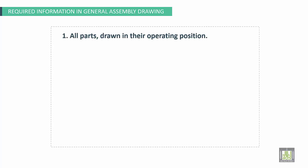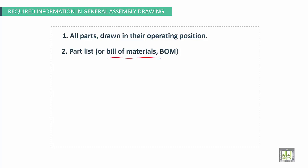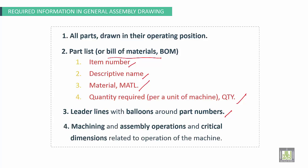Required information in general assembly drawing: All parts drawn in their operation position. Part list or bill of materials. Item number. Descriptive name, material, quantity required per unit of machine. Third point we have leader lines with balloons round part numbers. Finally machining and assembly operations and critical dimensions related to operation of the machine. These are the required information in general assembly drawing.